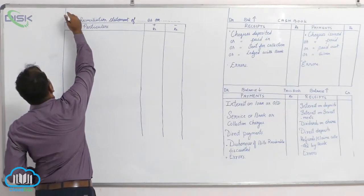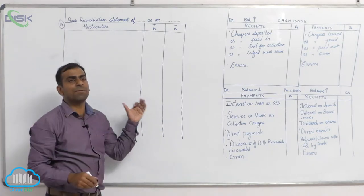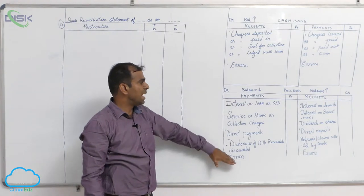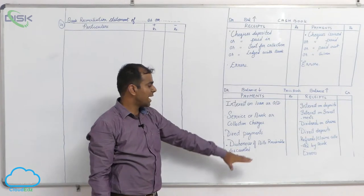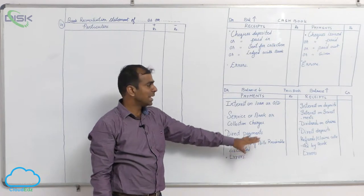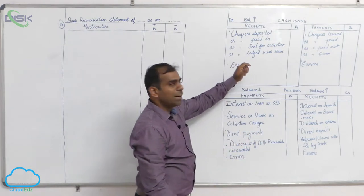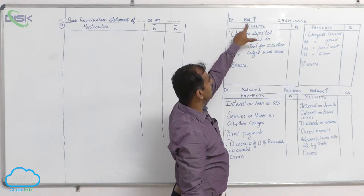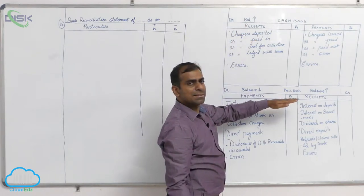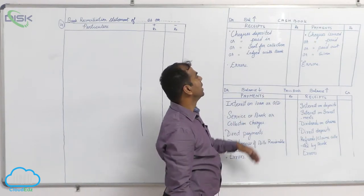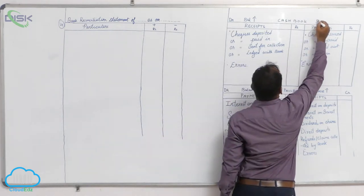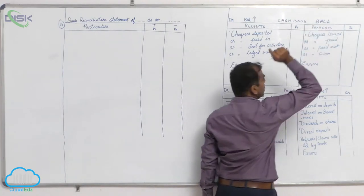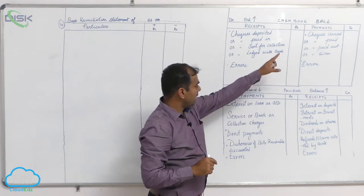We will be discussing the fourth problem. We have to find out the balance of one book that is not given. As a reference we have the cash book and pass book, along with the major entries first made in the cash book. If an entry is made on the debit side of the cash book, the cash book balance will increase, and the pass book balance remains where it is — or you can say the pass book balance is decreasing. Similarly, when an entry is made on the credit side, that is the payment side, the cash book balance decreases.